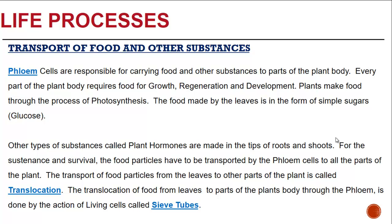Every part of the plant body requires food for growth, regeneration and development. Plants make food through the process of photosynthesis, and the food is made by the leaves in the form of simple sugars, namely glucose.